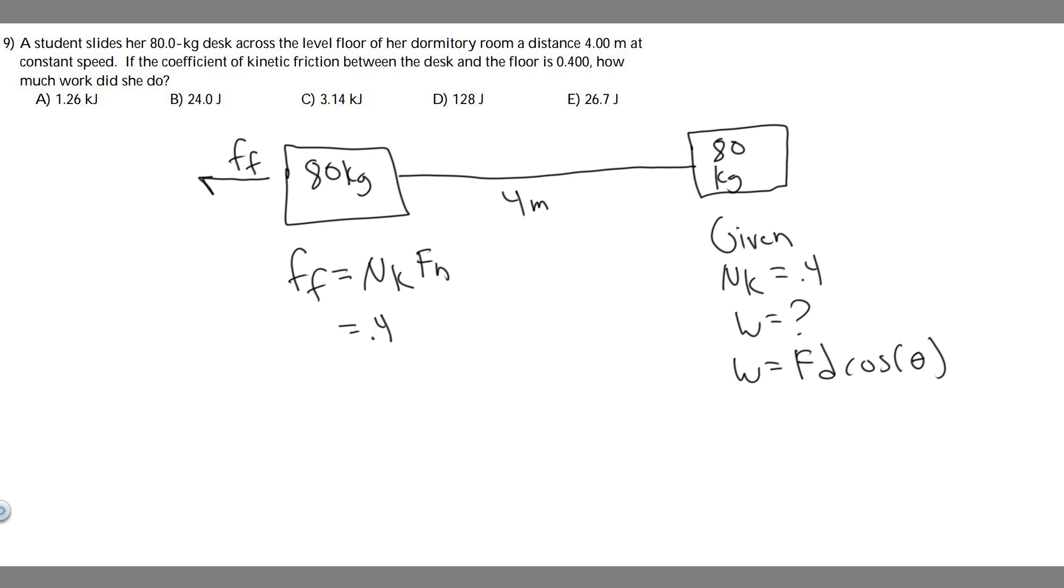To calculate the normal force, we have to look at the y direction. We only have one force acting down, which is the force of gravity, mg, and then we have the normal force going up. The normal force is just going to be equal to mg in this case because the sum of the forces in the y equals 0. So that just means Fn minus mg equals 0, and Fn equals mg.